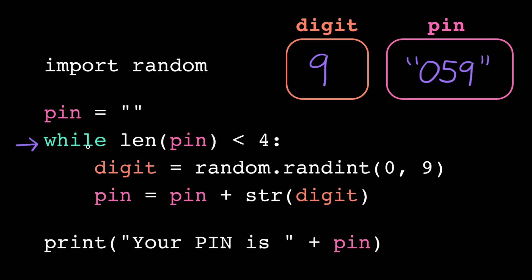Back to the top of the loop, the length of pin is now 3. 3 is less than 4, so the loop condition is still true. And we start the fourth iteration.